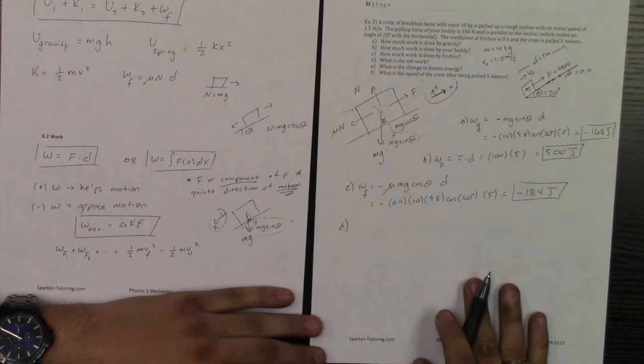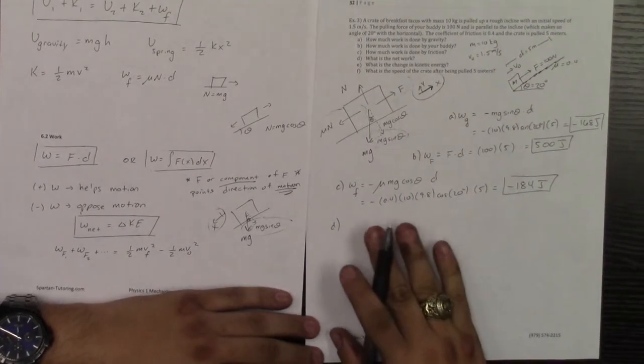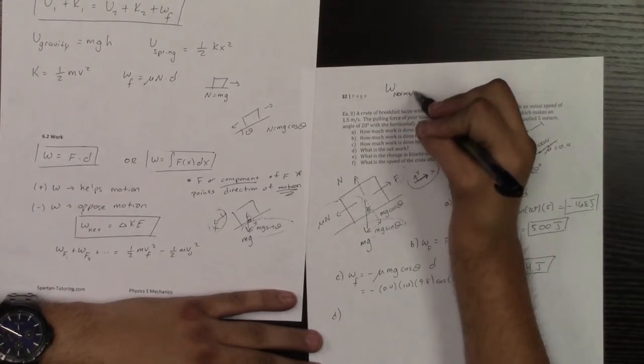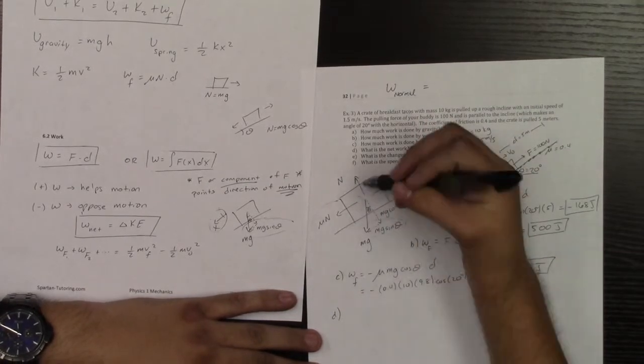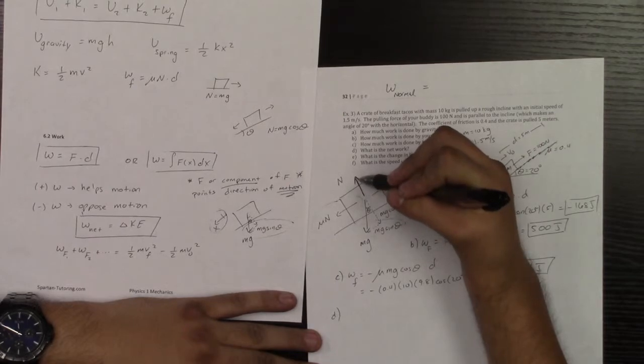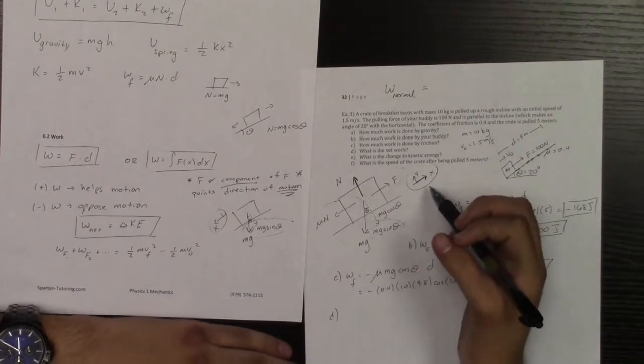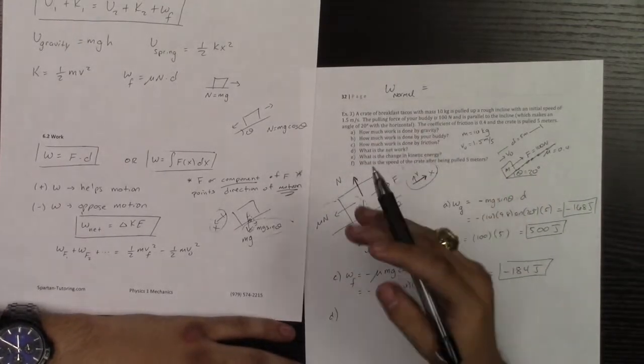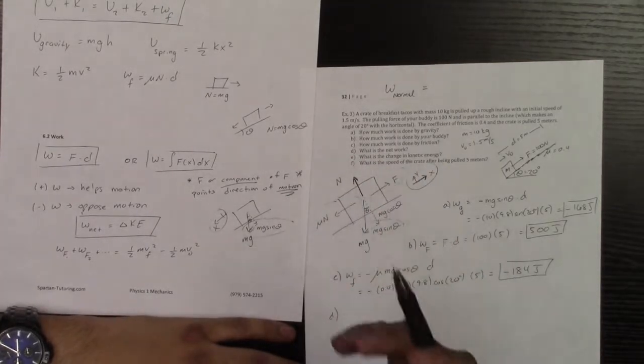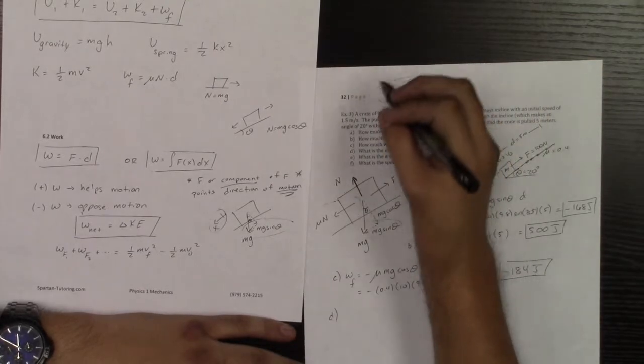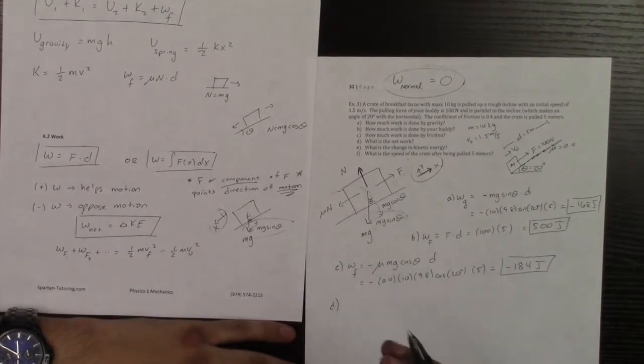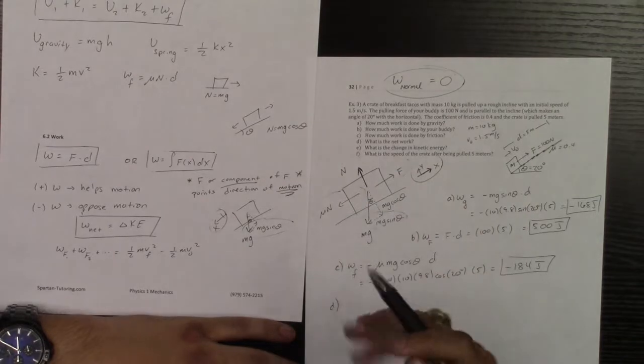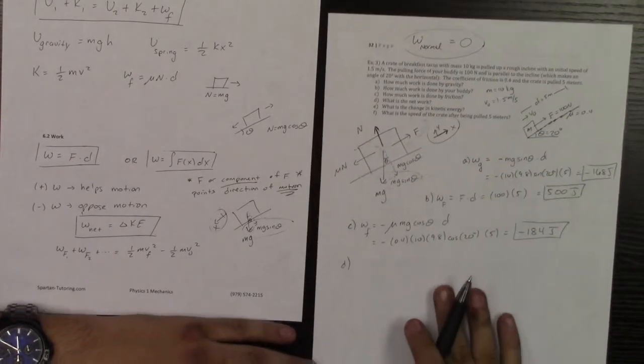Let's take a look at part D. Part D asks, what is the network? Before we talk about the network, I do want to just mention something. What's the work done by my normal force? Notice how your normal force, I know it's not part of the question, but it's very important because I've seen this on exams before. Notice how my normal force is actually perpendicular to the motion. It has no x component whatsoever. It is neither assisting nor is it opposing that motion. And because it neither helps nor opposes it, the work done by your normal force is just going to be 0. So in case they ask that, any force that is perpendicular to the motion, so a force that is neither helping nor opposing it, is always going to have a work of 0.